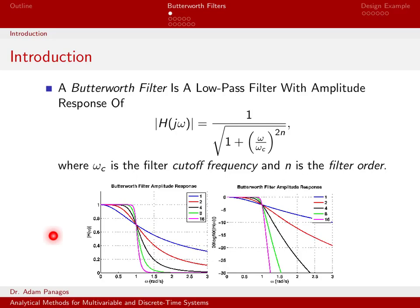Here are some plots for what the amplitude response looks like as a function of omega for different filter orders. This right here is on a linear scale. Here's my amplitude response plotted on a linear scale between 0 and 1. Here is the amplitude response of the filter plotted on a dB scale between minus 30 dB and 0.